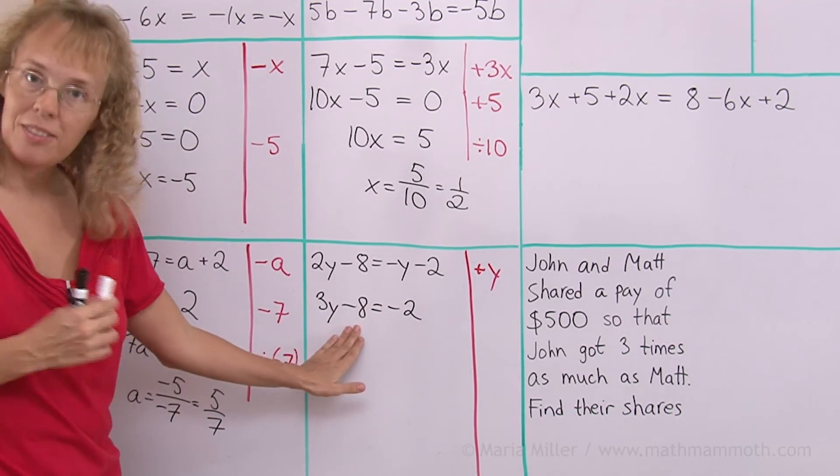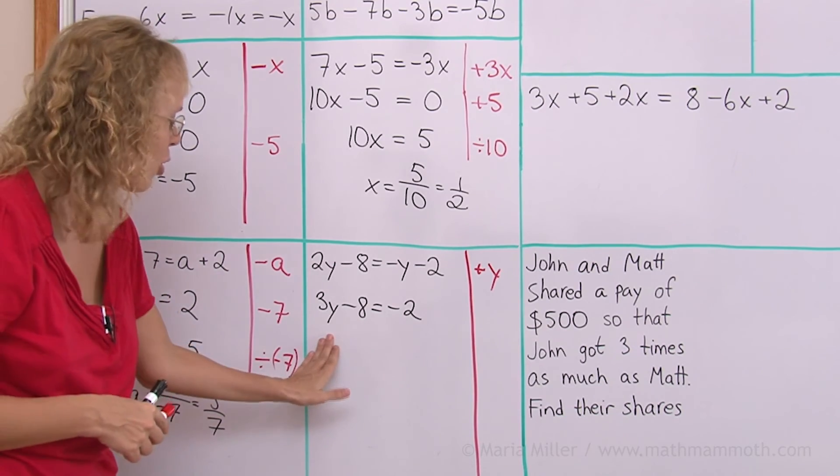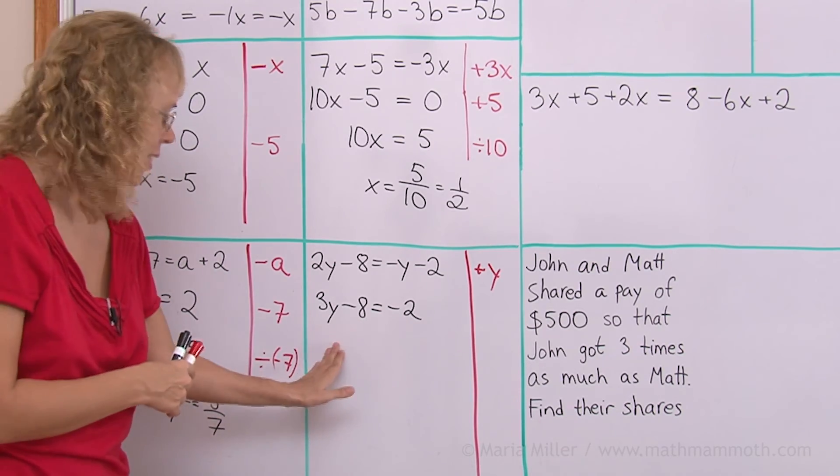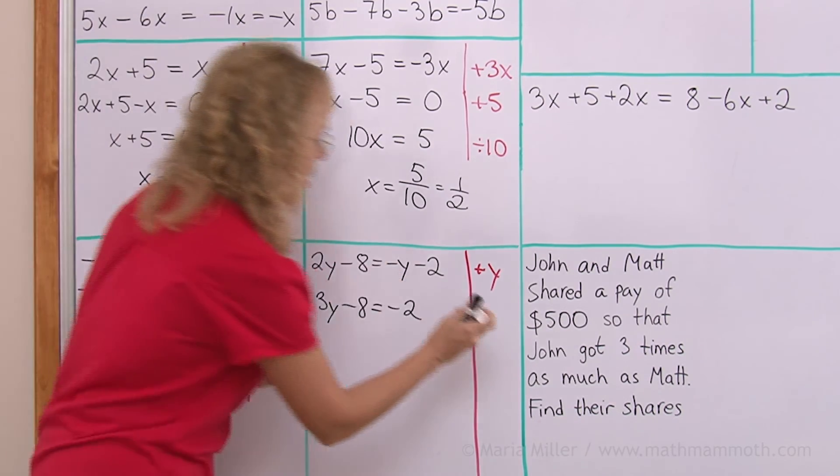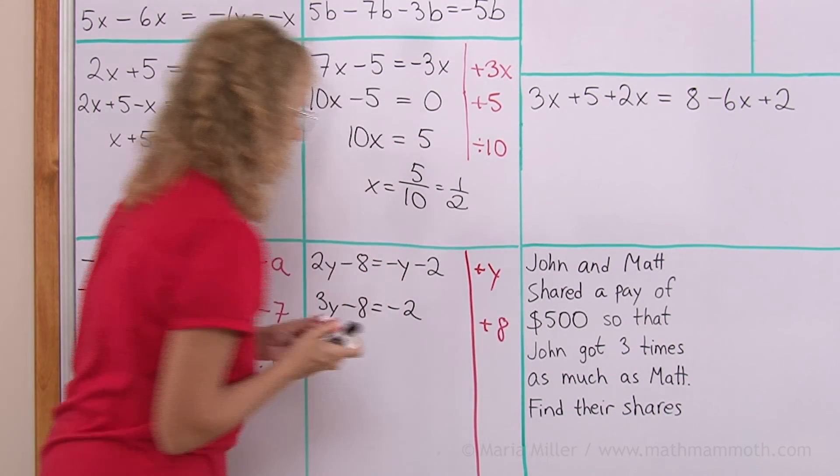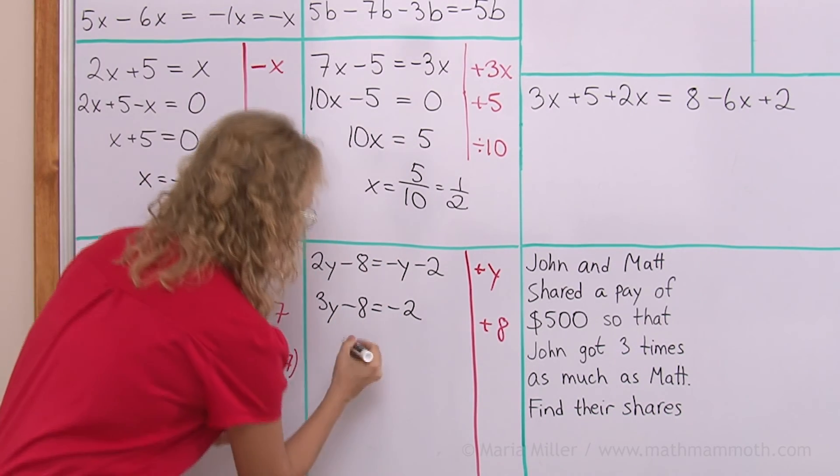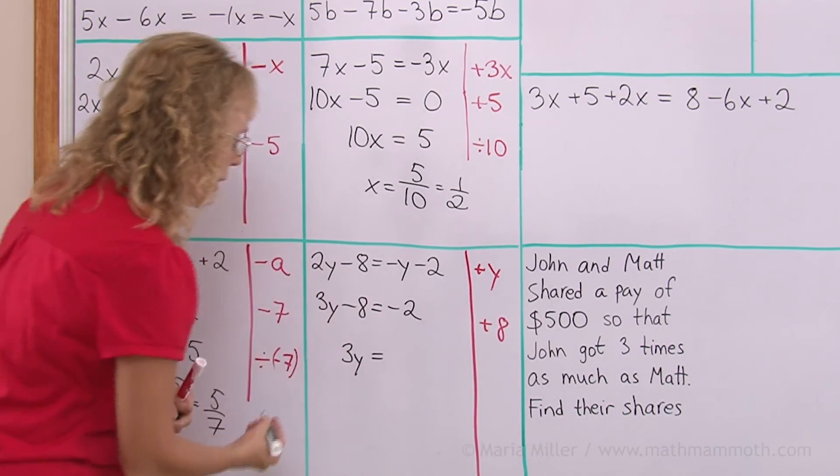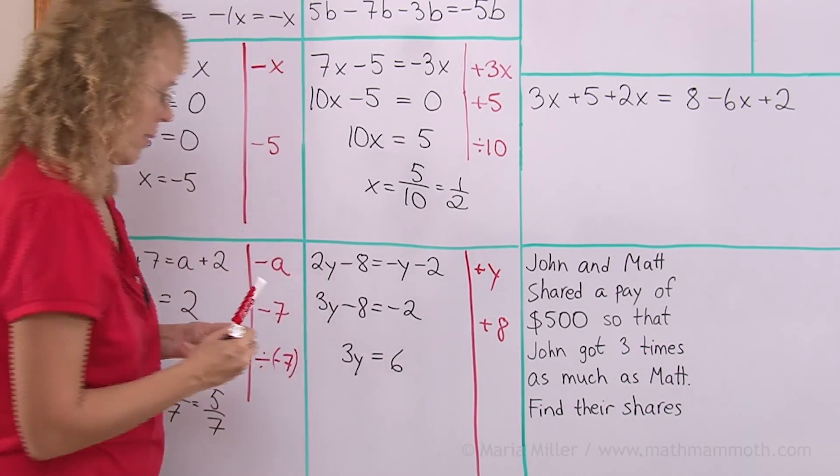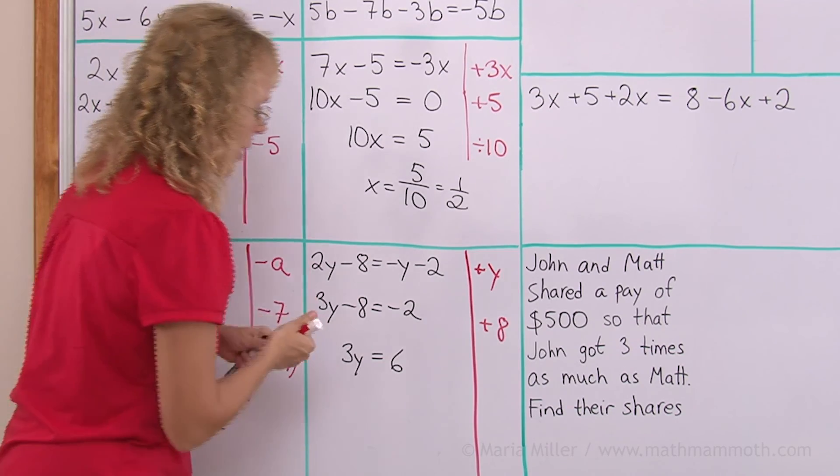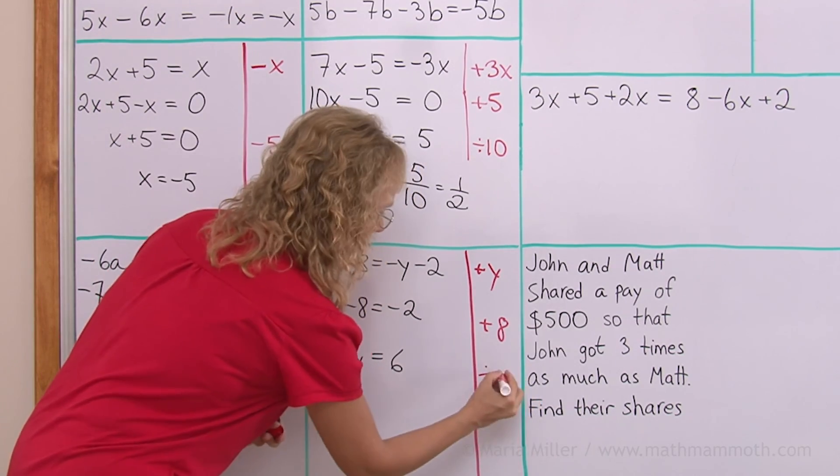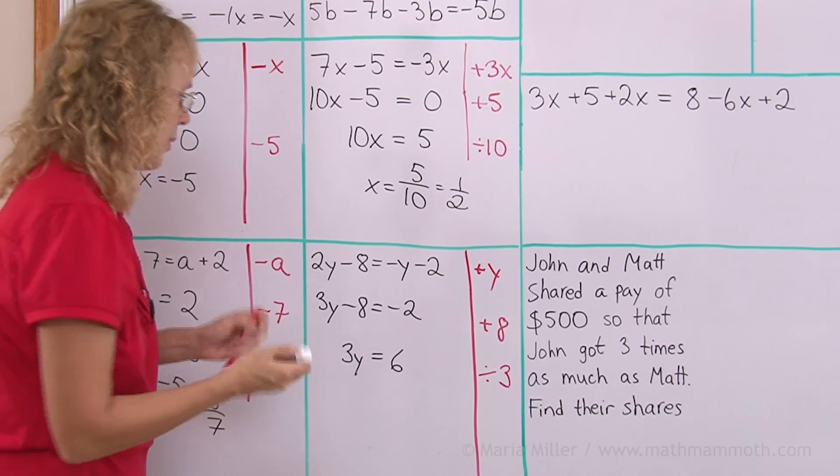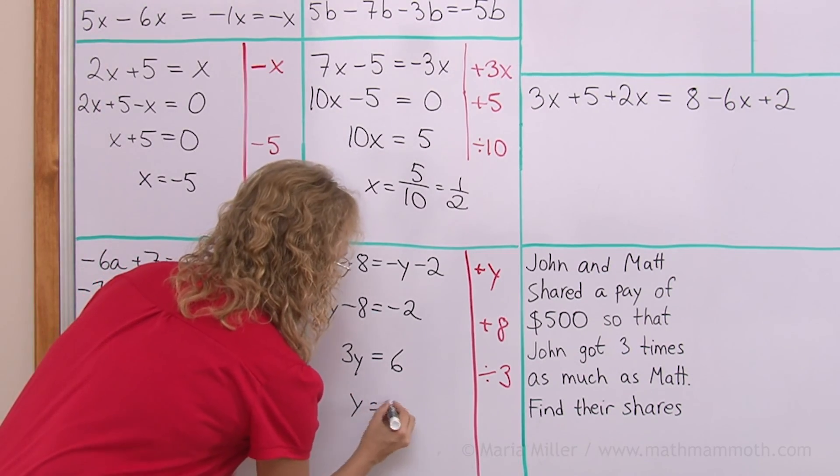And now, I want to get rid of this negative 8 on this side, so that I will have alone the term with y on this side. So, to get rid of negative 8, I add 8. And we have 3y alone now. On this side, I need to add negative 2 plus 8. That would be 6. And then, lastly again, we divide both sides by 3. So, we get y equals 2.